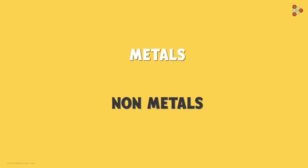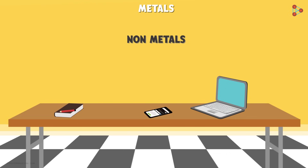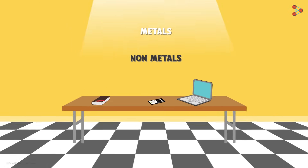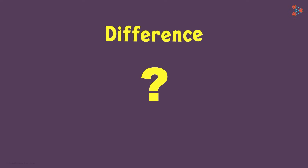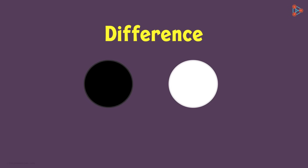You must have all heard the terms metals and non-metals. Can you look around and see if they exist in your surroundings? What is your table made up of — aluminium or wood? What about the phone or the laptop you are viewing this video on? Is it made up of metals and non-metals? As a matter of fact, it is. Almost everything around you will be made up of either a metal or a non-metal. But how do you differentiate between the two? Let us look at the physical properties of each category in detail.